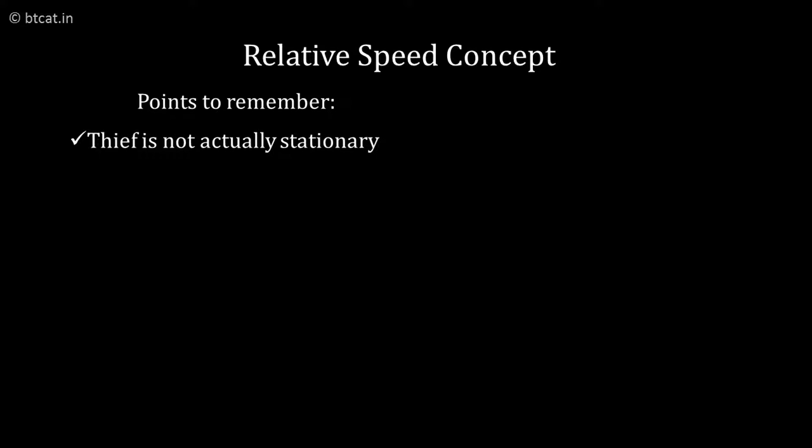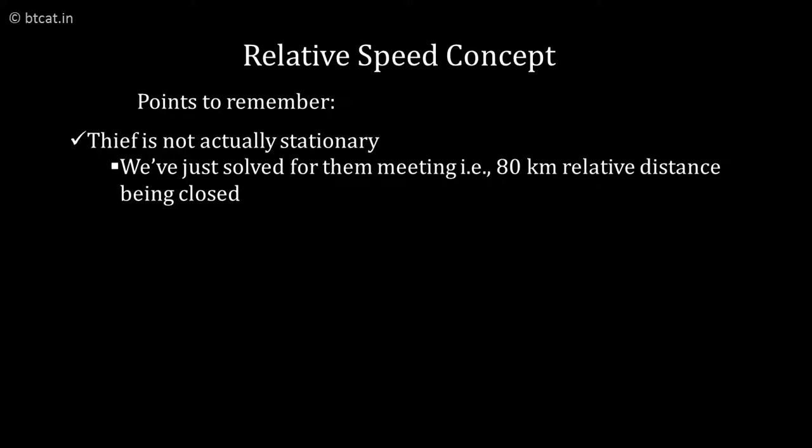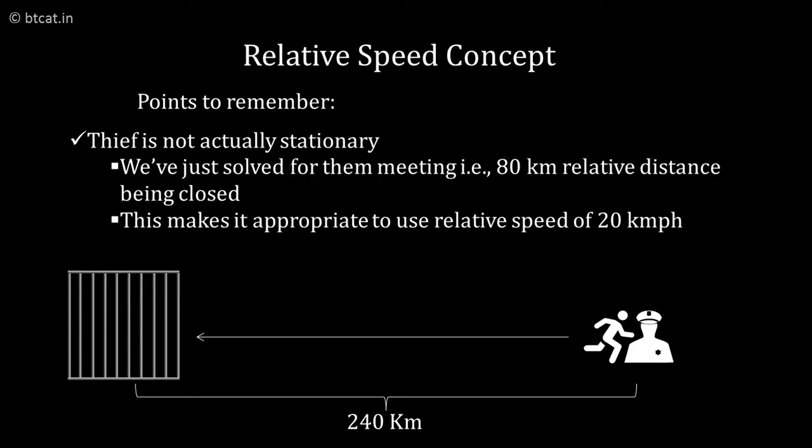What some students fail to understand is that the thief is not stopping at 80 km—the thief is also running. But we are taking the 80 km distance, and that is why we have taken the net effective speed of the police as 20 km per hour. We have factored in the thief's movement of 40 km into the police's speed of 60 km. That's why we took the extra 20 km per hour. The thief will be caught at 12 noon.